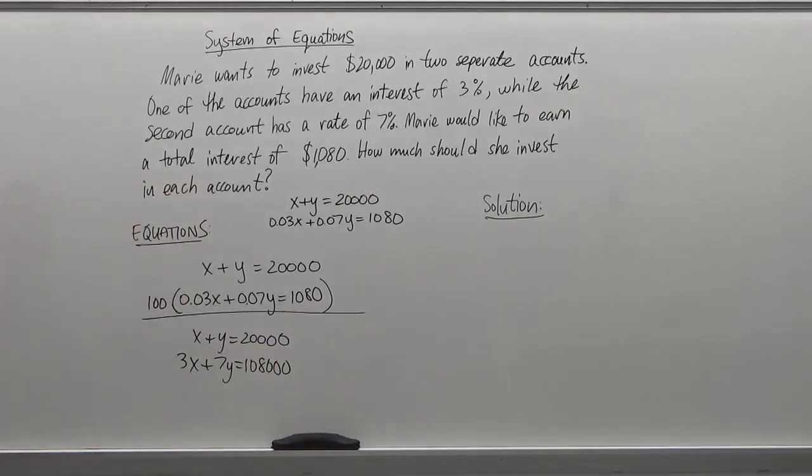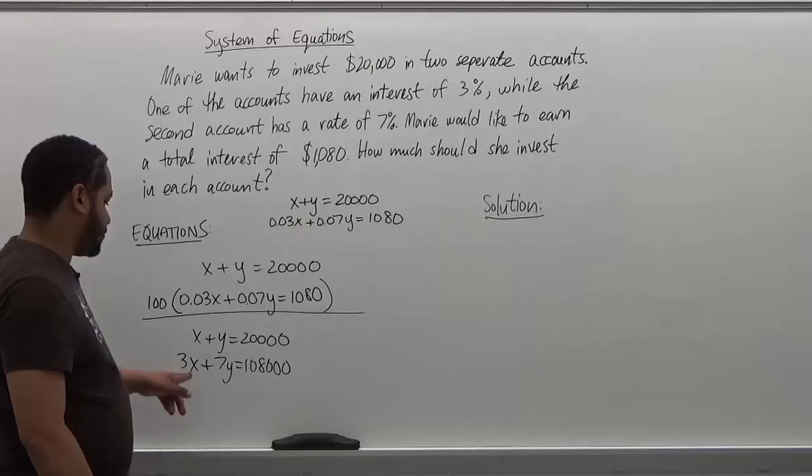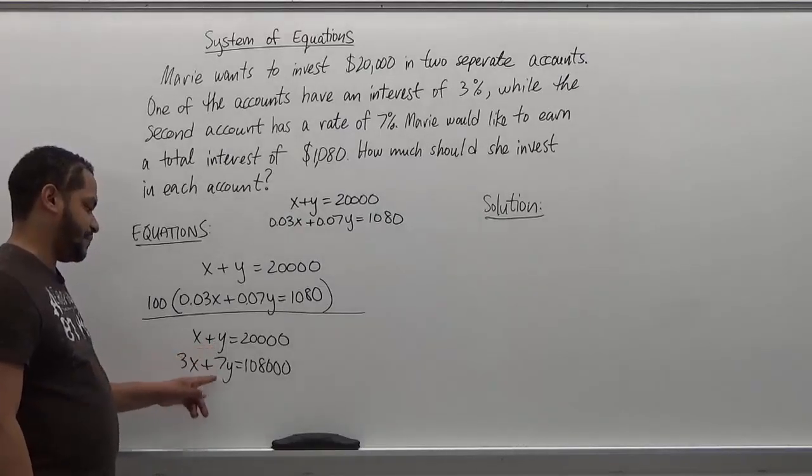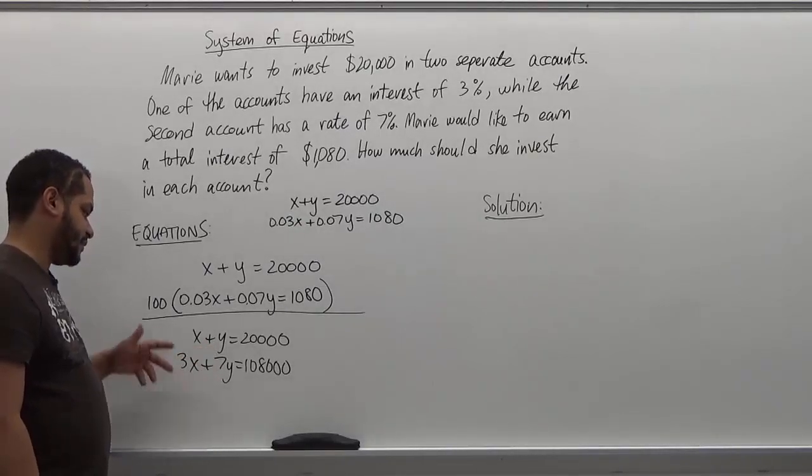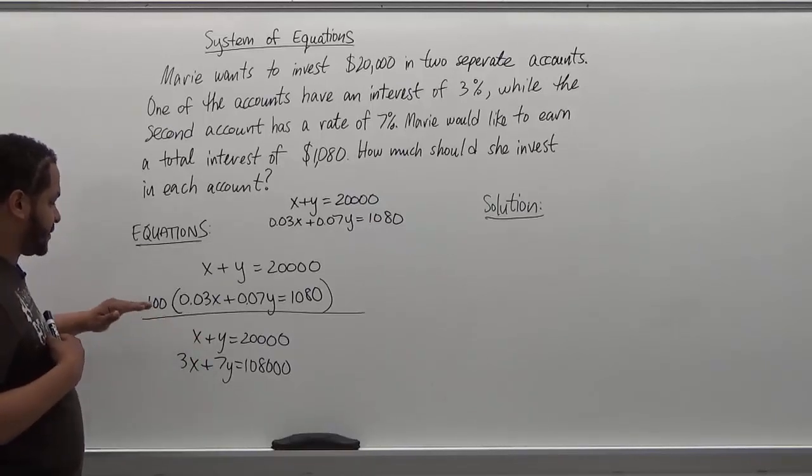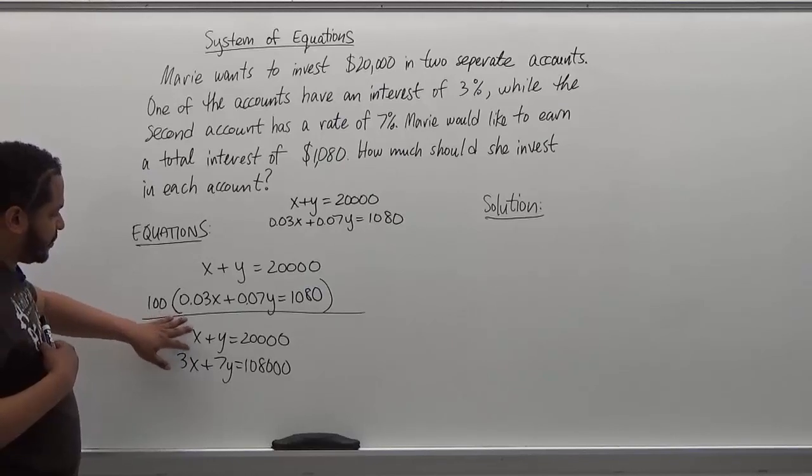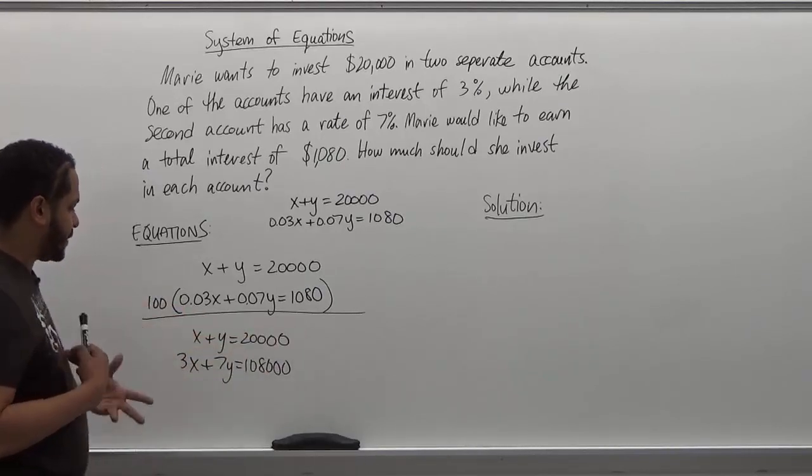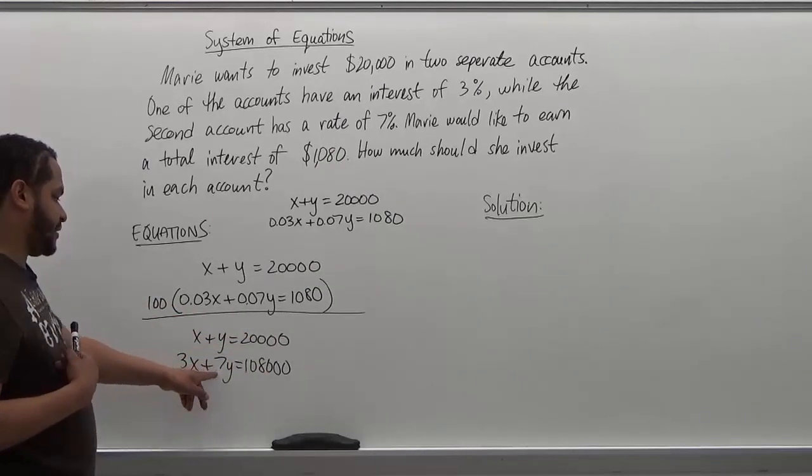Alright? The next step here is to make two of the terms the same but opposite. Just one set, either the x's or the y's. I'm going to choose the x's personally because I want to make the number as small as possible when I magnify it and make it larger. And three is smaller than seven.